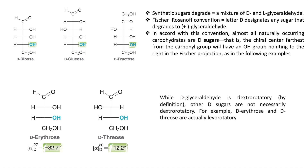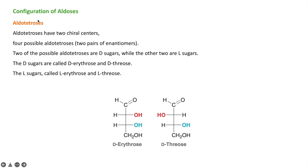So D and L have no connection with the direction of rotation of plane-polarized light — they are simply used for naming sugars. Now we will talk about the configuration of aldoses. First, aldotetroses: aldotetroses have two chiral centers, giving four stereoisomers — or two pairs of enantiomers — calculated by the formula 2^n, where n is the number of chiral carbons.